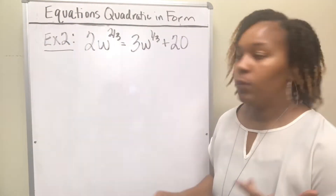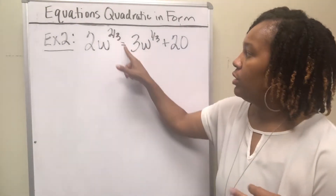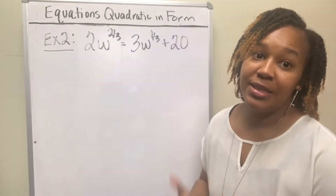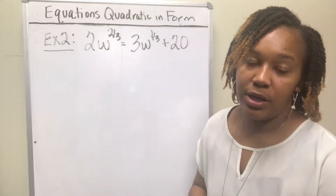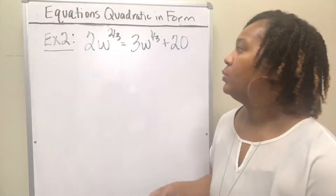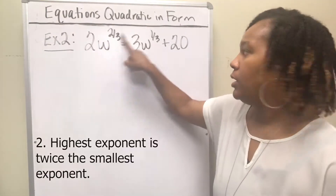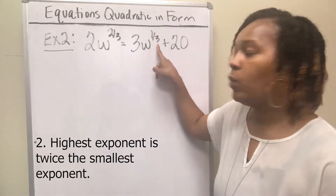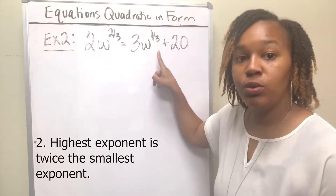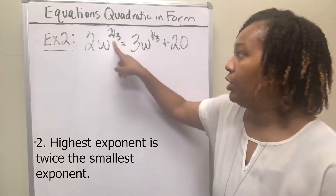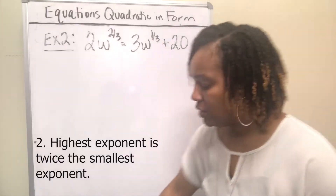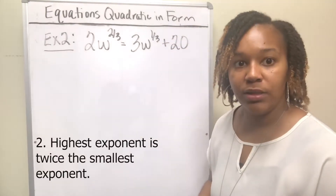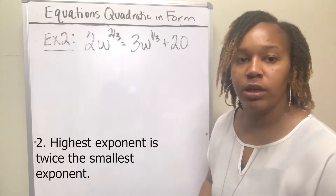Example two: we want to solve 2w^(2/3) = 3w^(1/3) + 20. Now this one does not look like a quadratic equation, but this is the second case where the highest exponent is twice the smallest exponent. What is (1/3) times 2? It's 2/3. So our biggest exponent is twice the smallest exponent, which means you can also make this one look like a quadratic equation.